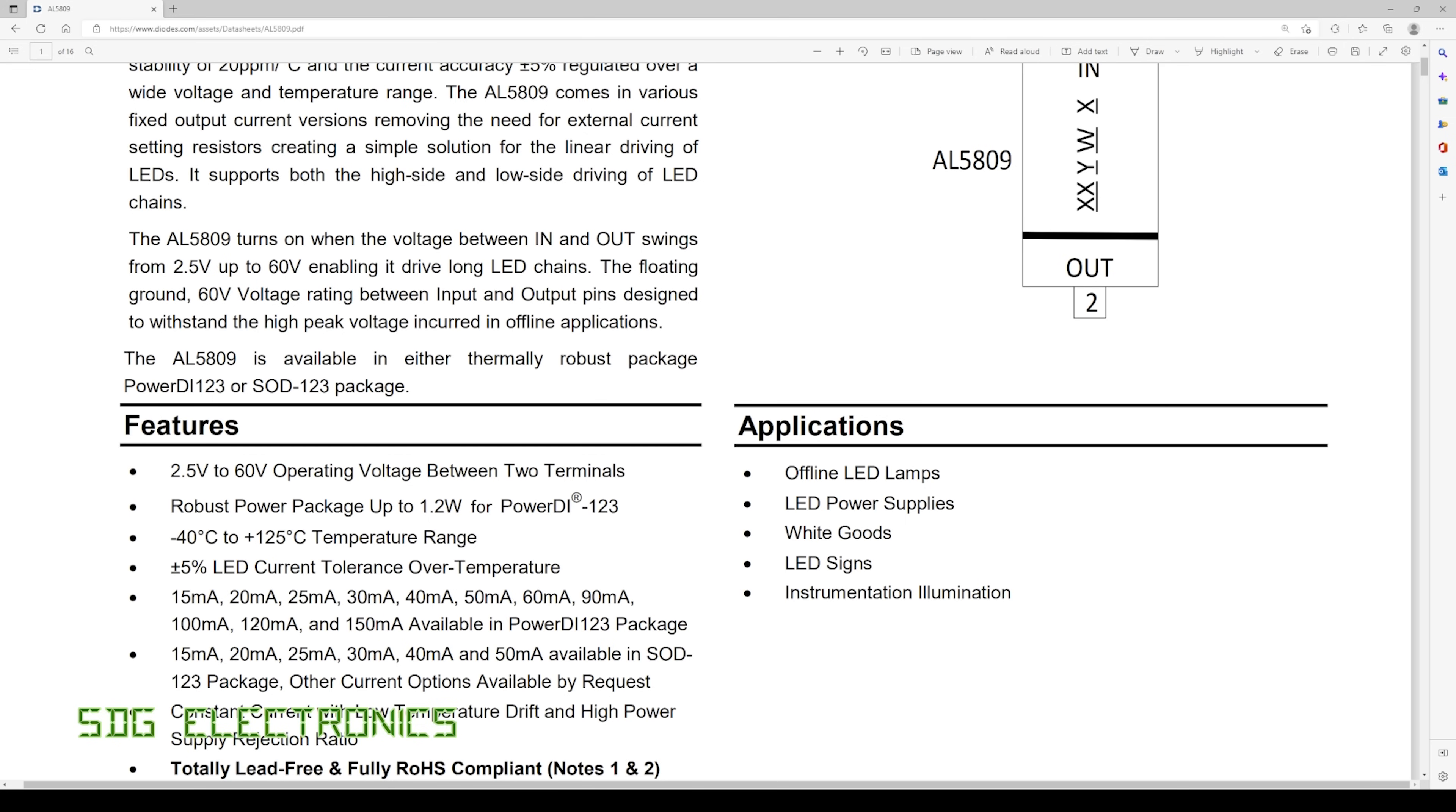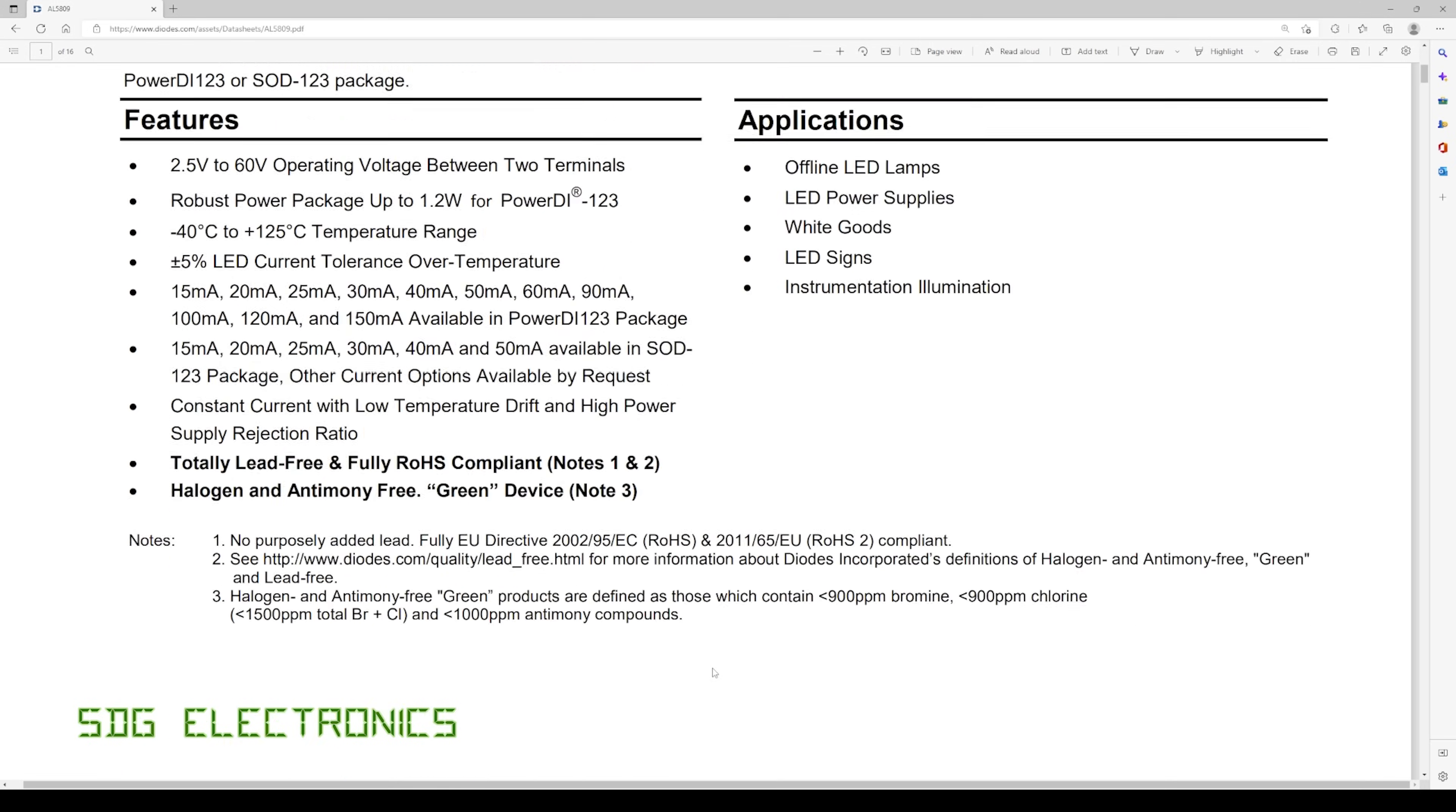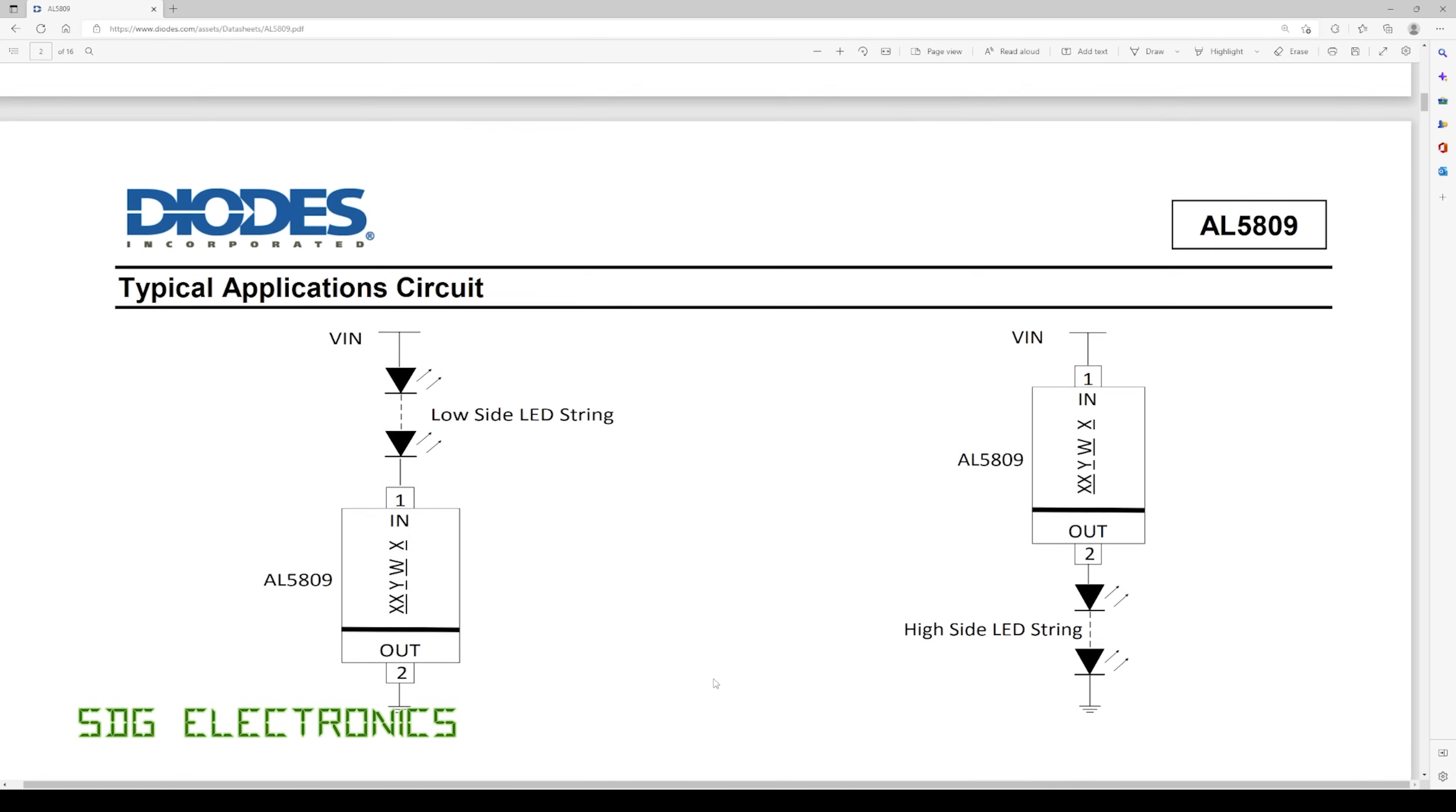I think ideally I would have settled on 120 milliamps because 150 on these LEDs is far too bright but we can drive it 150 and just reduce the maximum brightness in PWM. So these are really straightforward devices to wire up.